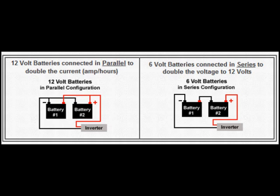As you can see by this diagram that we've posted above, you can see the difference between parallel and series connections. The difference is a series connection will increase the voltage of the battery by connecting positive to negative. For example, if you're going to use two 12 volt batteries connected in series, the end result will be a 24 volt battery.